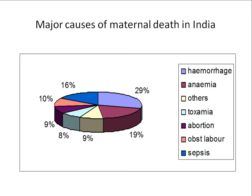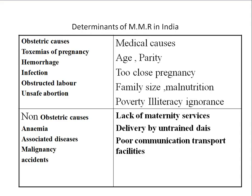The major causes of maternal deaths in India: 29% are due to hemorrhage, 19% due to anemia, 16% due to sepsis, 10% due to obstructed labor, 9% due to abortion, 8% due to toxemia of pregnancy, and 9% are others. The major causes are hemorrhage at 29% and sepsis at 16%.